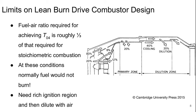Combustor design is driven by the limits on lean burn. When we were talking about internal combustion engines earlier in the course, we saw that equivalence ratios near 1 are what's commonly used. But the fuel-air ratio required to get T04 in the ranges that we want is roughly a third of that required for stoichiometric combustion. With these conditions, normally the fuel wouldn't burn at all — there's just too much excess oxygen and air. So we need basically a rich ignition region and then dilute it with air. In this schematic of a combustor, only about 10–12% of the air goes into the ignition zone initially, and then gradually more cooling and dilution air is added.